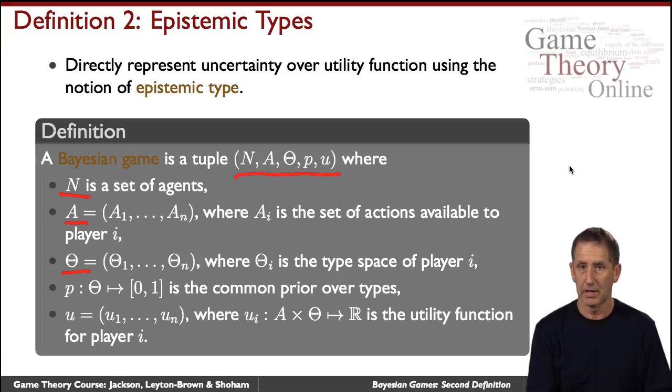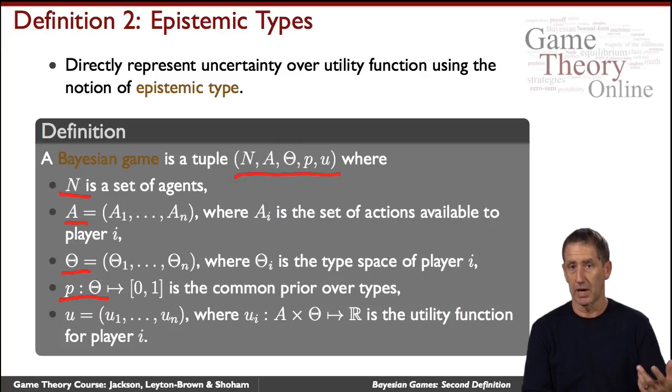And we have a common prior, as in the first definition of games, we have a common prior, but now it's not over games, it's over types. So each agent has the type, and that prior is common, the type is chosen according to a probability distribution that's commonly known by all the agents, and each agent knows their own type.